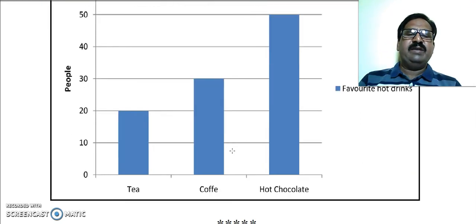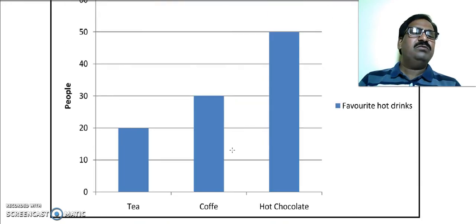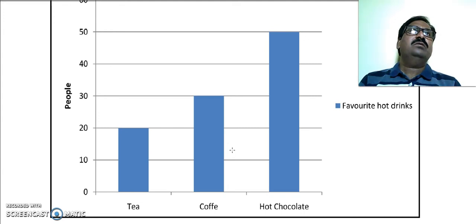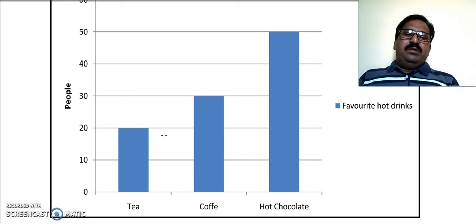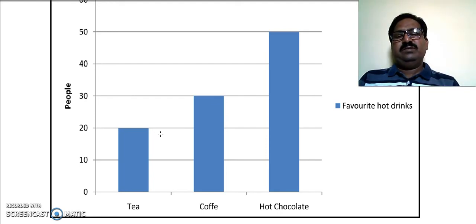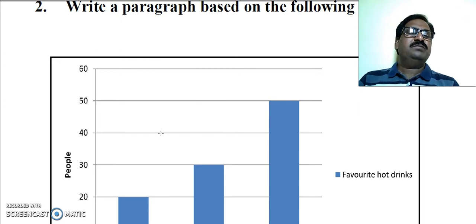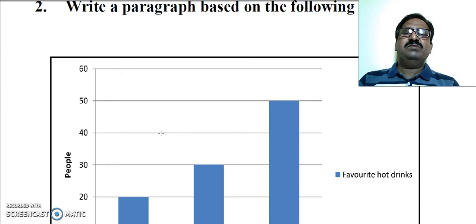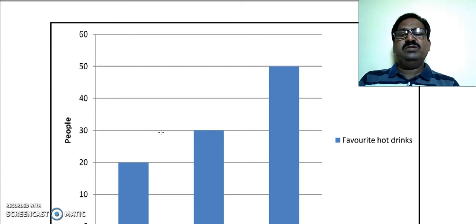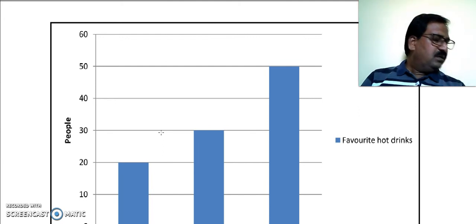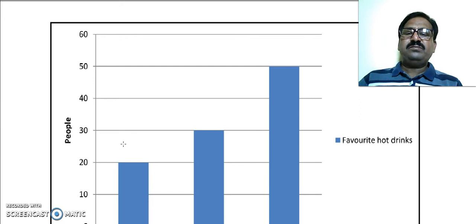This diagram can be interpreted in our own language. So in this way, we have discussed in this particular module — information transfer and interpretation of data. First, we discussed tree diagram, then table, then pie chart, flow chart, bar diagram, and line graph. These are various ways by which you can describe or show information in various diagrams and also interpret such diagrams.